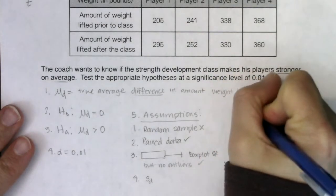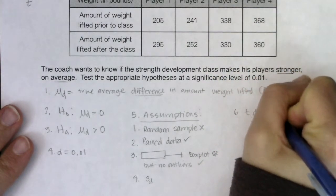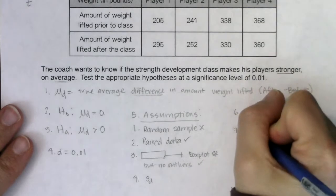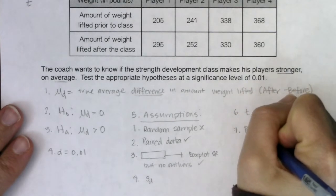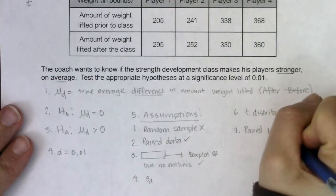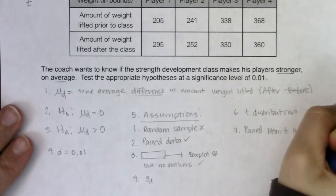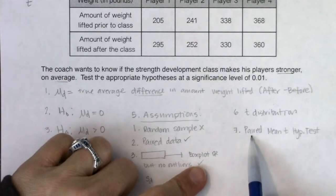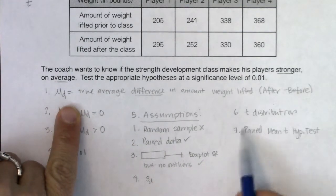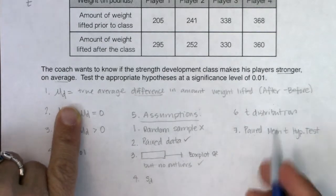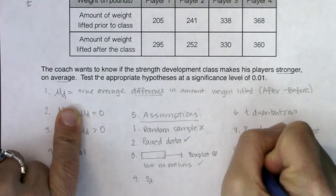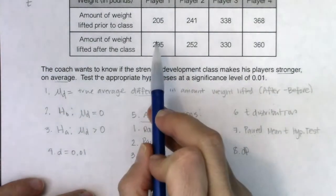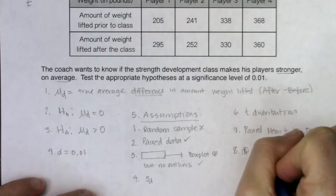I'm on the t-distribution. The name of this test is a paired mean t-test — a paired mean t hypothesis test. Where normally we say how many samples we have, with a paired test you just write 'paired mean,' not 'one-sample mean' or 'two-sample mean.' For degrees of freedom, it's n minus 1 — back to what we did in chapter 9. I had four players, so I have three degrees of freedom.